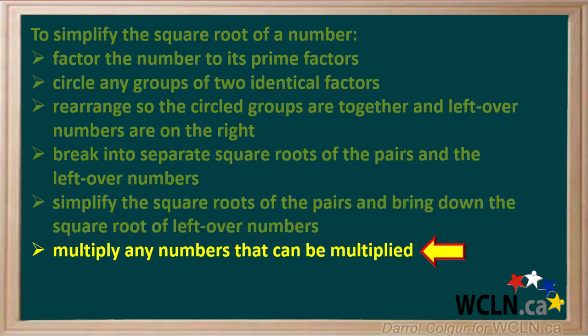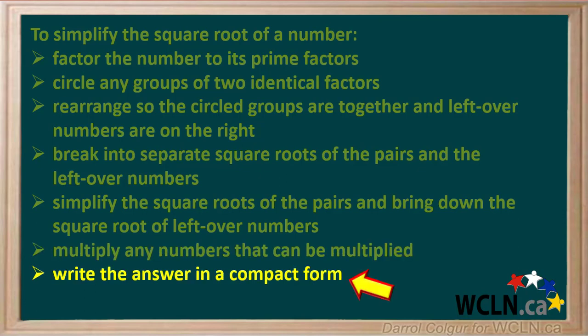Next, simplify the square root of each pair and bring down the square root of any leftover numbers on the right. Then multiply any numbers that can be multiplied either outside or inside any radicals. Lastly, write the answer in the most compact form it can be.